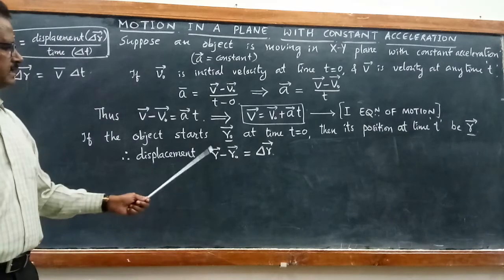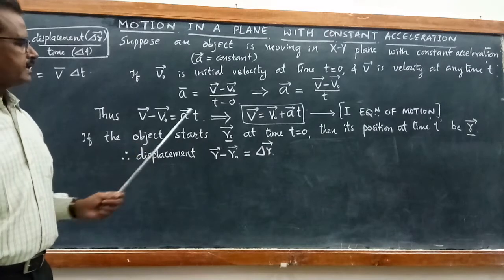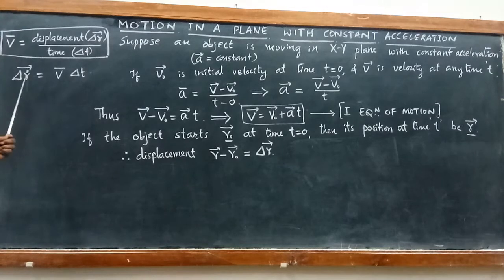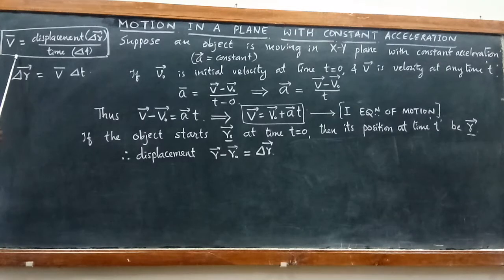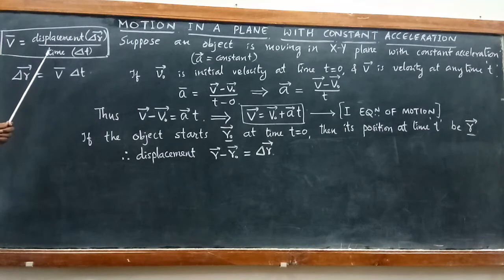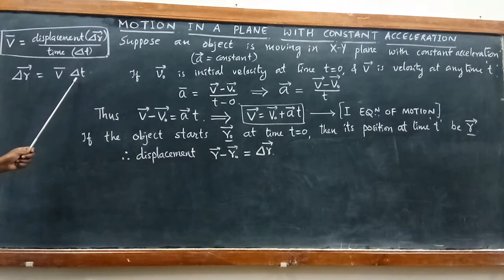Using this Δr, we can calculate the actual displacement. We know that average velocity equals Δr/Δt, where Δr is displacement and Δt is total time. Therefore Δr = v̄ · Δt.